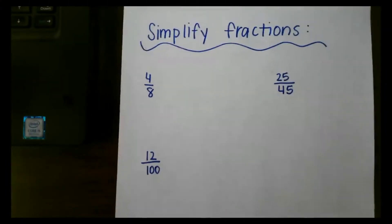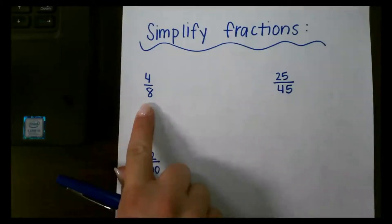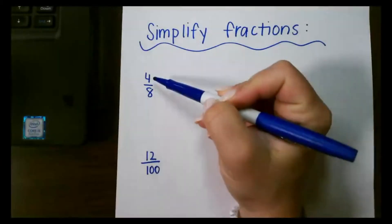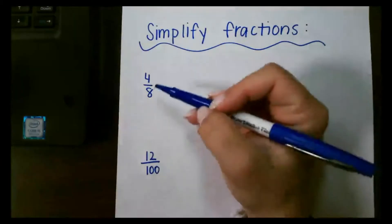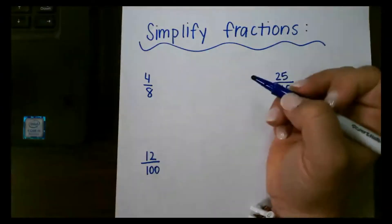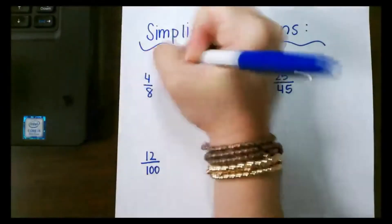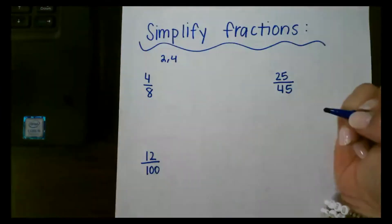Let's look at how we can simplify these fractions. So with 4/8, you want to look at this and figure out what number can go into both 4 and 8. What can I divide both 4 and 8 by? I could use 2 or I could use 4, either one of those.